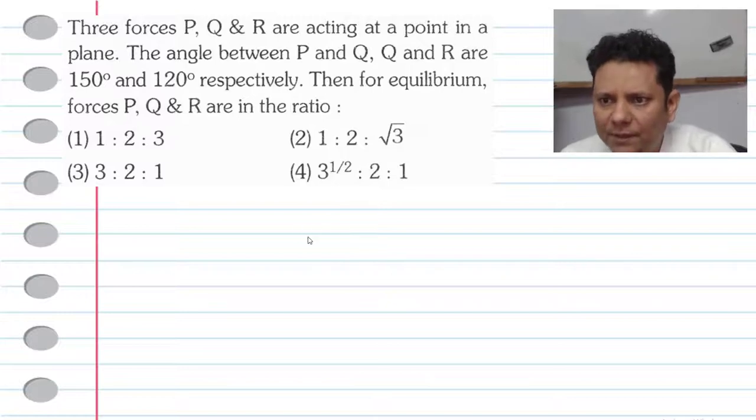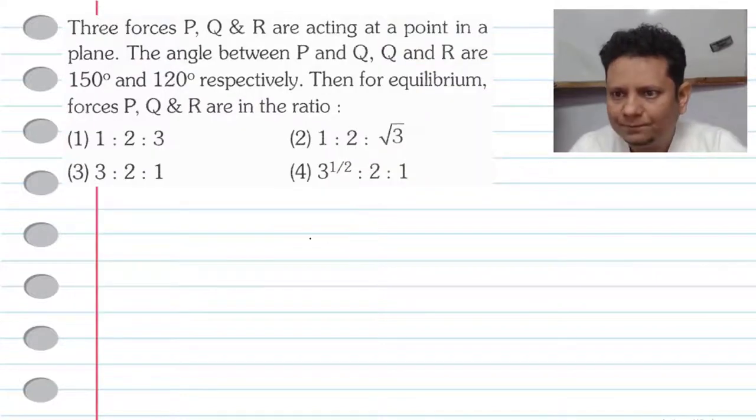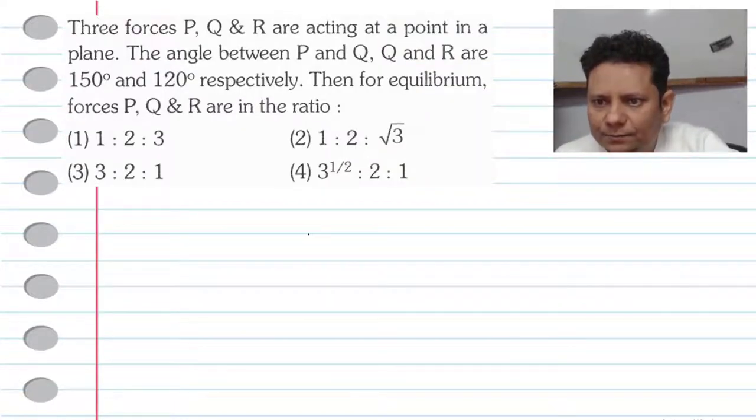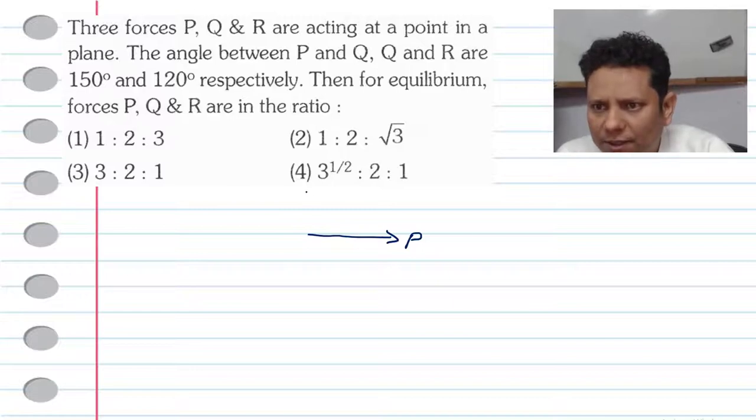First, let's understand the situation. The situation is that we have three forces. So let us say P, which force is in this direction. So this is our P force. Angle between P and Q is 150 degree.